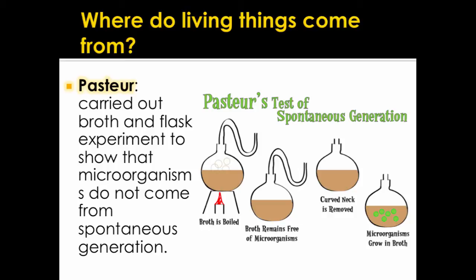Pasteur was another scientist who tested where living things come from. He carried out a broth and flask experiment to show that microorganisms, or bacteria, do not come about from spontaneous generation. He boiled broth in this flask and left it for weeks and weeks — the broth never rotted and no bacteria ever grew. However, when he broke off the neck of the flask, bacteria were able to fall into the broth from the air and the microorganisms could grow. He proved that bacteria don't come from non-living things; they come from bacteria living in the air, or from somebody's mouth if they cough.